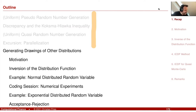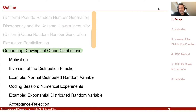Now I would like to discuss how we actually generate drawings — random number sequences of other distributions. The previous section only looked at uniformly distributed random numbers, but in many applications we are interested in sequences that follow a different distribution.